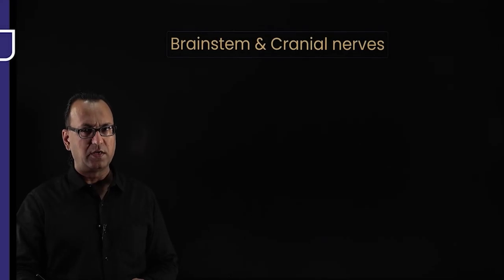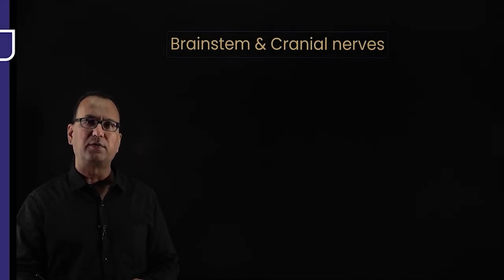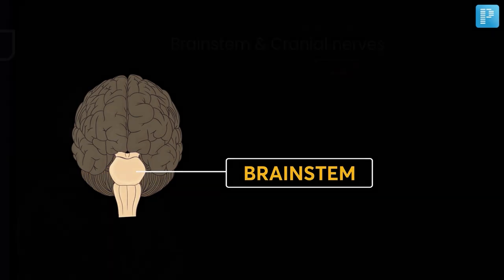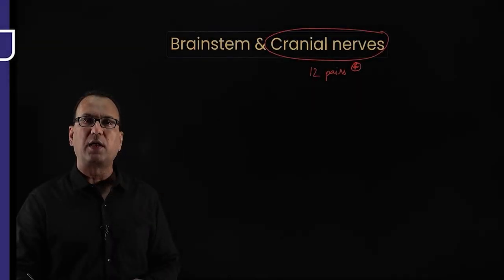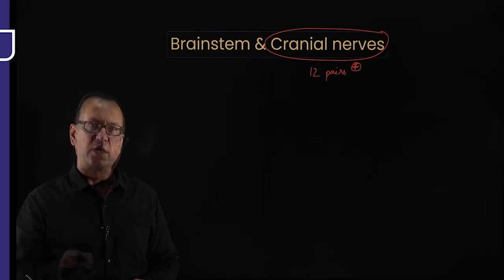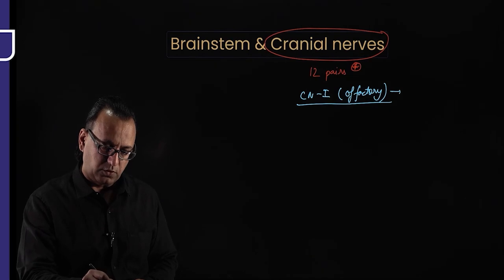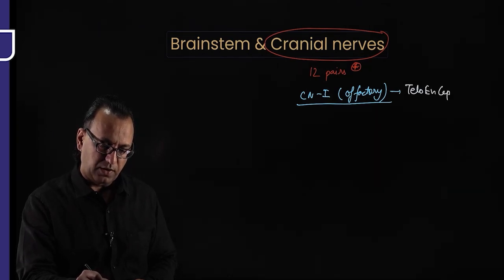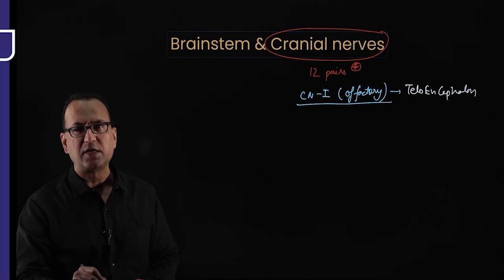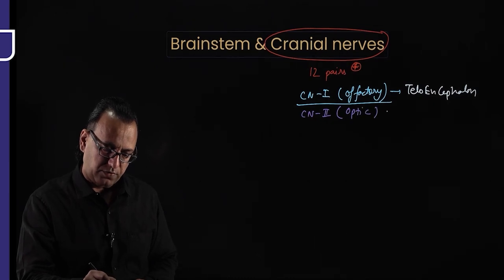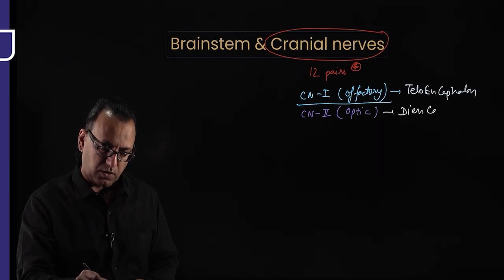There are 12 pairs of cranial nerves, and most of them come from the brainstem. However, cranial nerve number 1, the olfactory nerve carrying the sensation of smell, belongs to the telencephalon. Cranial nerve number 2, the optic nerve, is a nerve of the diencephalon. Neither of them belongs to the brainstem.